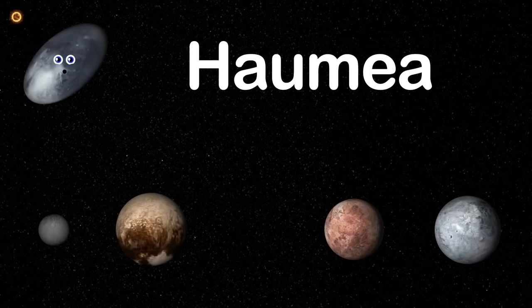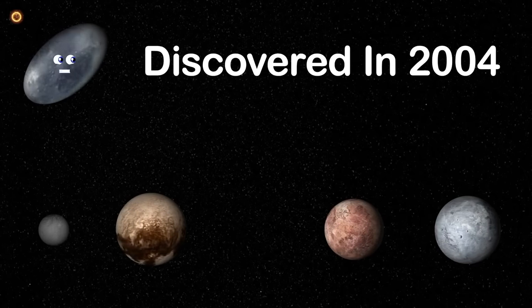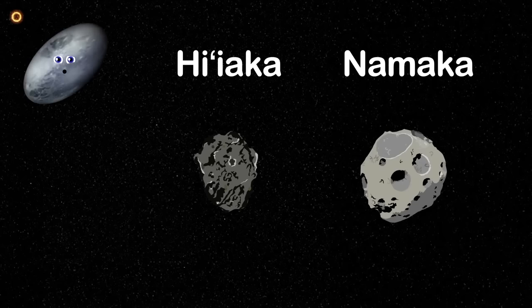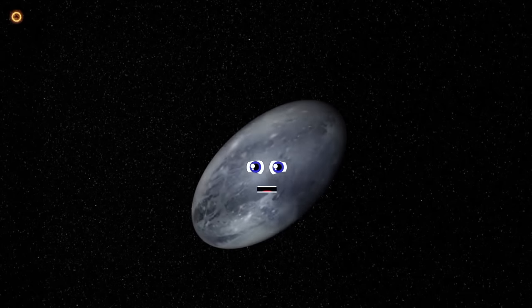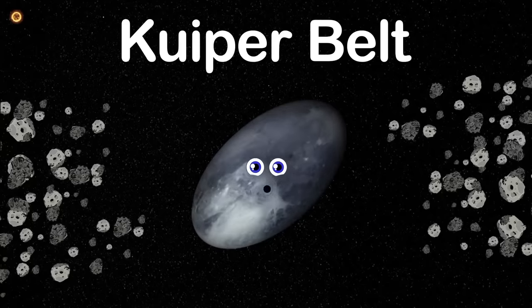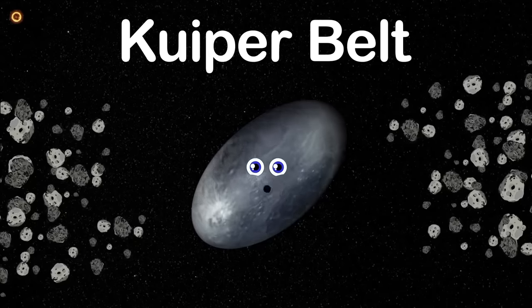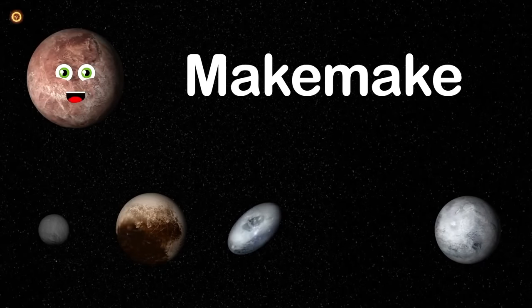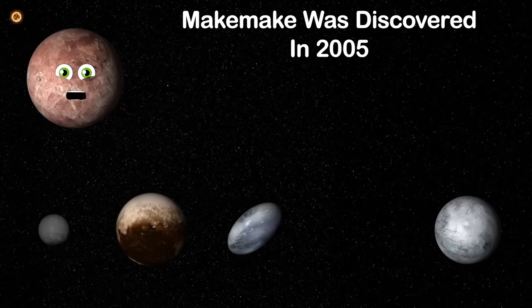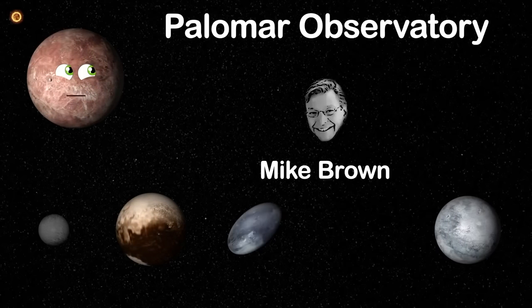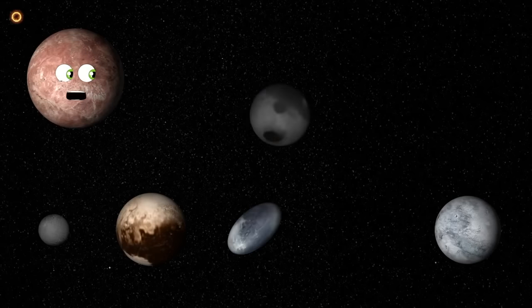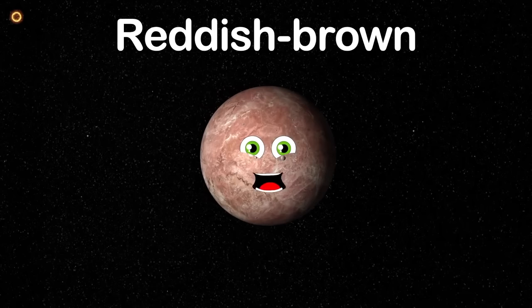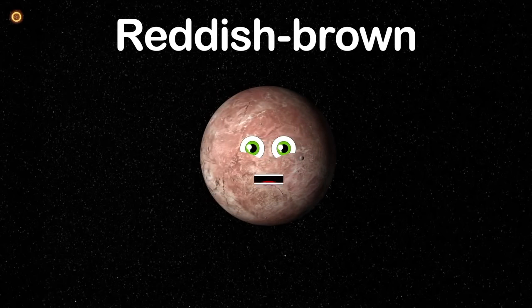I'm Haumea — a dwarf planet discovered in 2004 at the Palomar Observatory by astronomer Mike Brown. I have two moons. My elongated shape is due to fast rotation. I'm located in the Kuiper Belt, outside the orbit of Neptune. I'm Makemake, the fourth dwarf planet from the sun, also in the Kuiper Belt, discovered in 2005 by Mike Brown and his team. I have one provisional moon named MK2, about 13,000 miles from me. I appear reddish-brown in color.